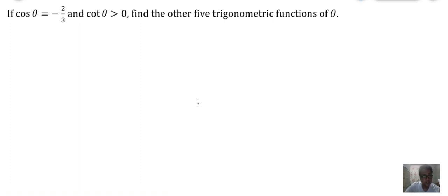We are given that cos θ = -2/3 and cot θ > 0. Find the other five trigonometric functions of θ.